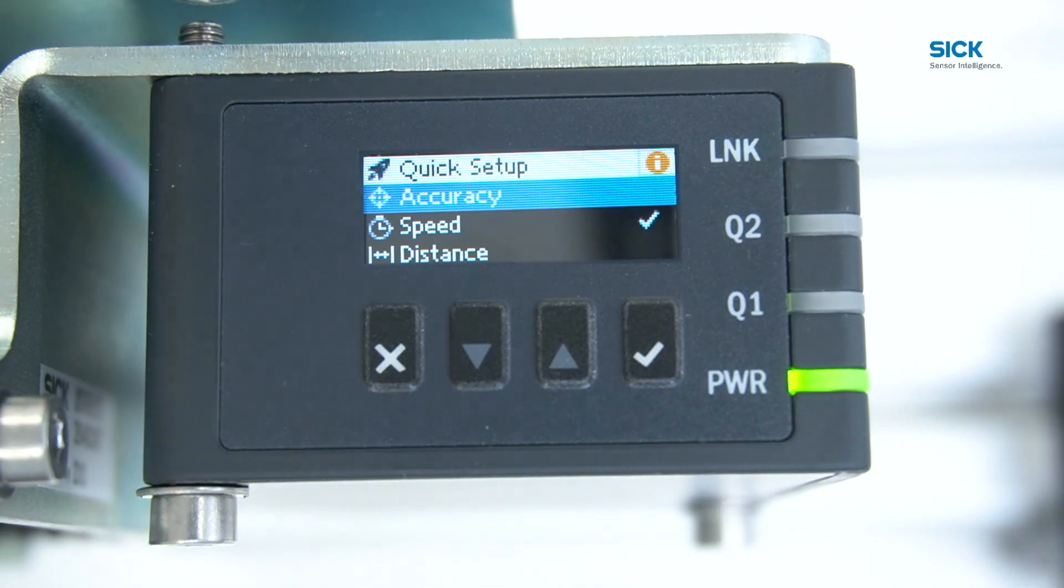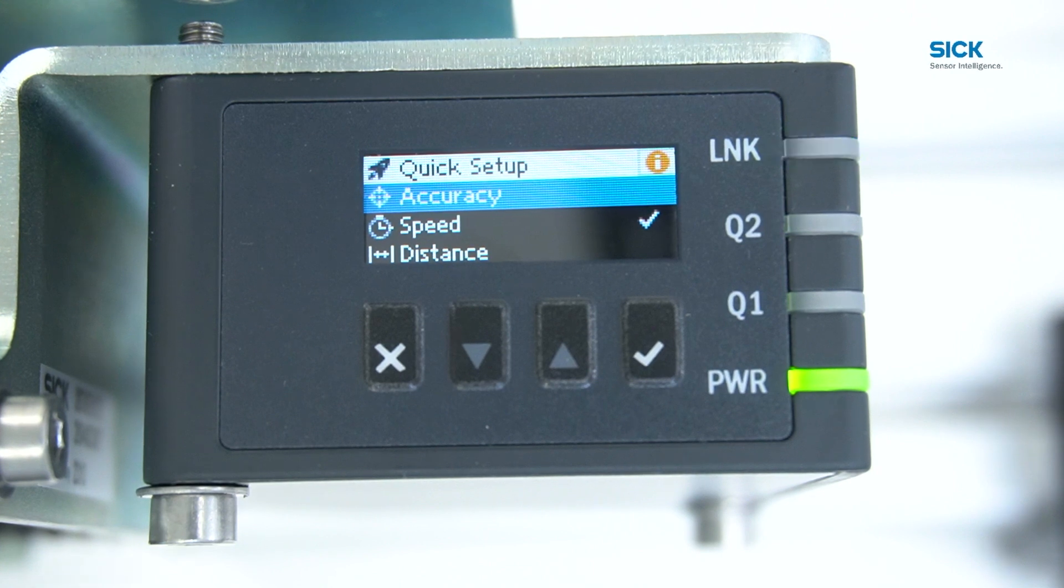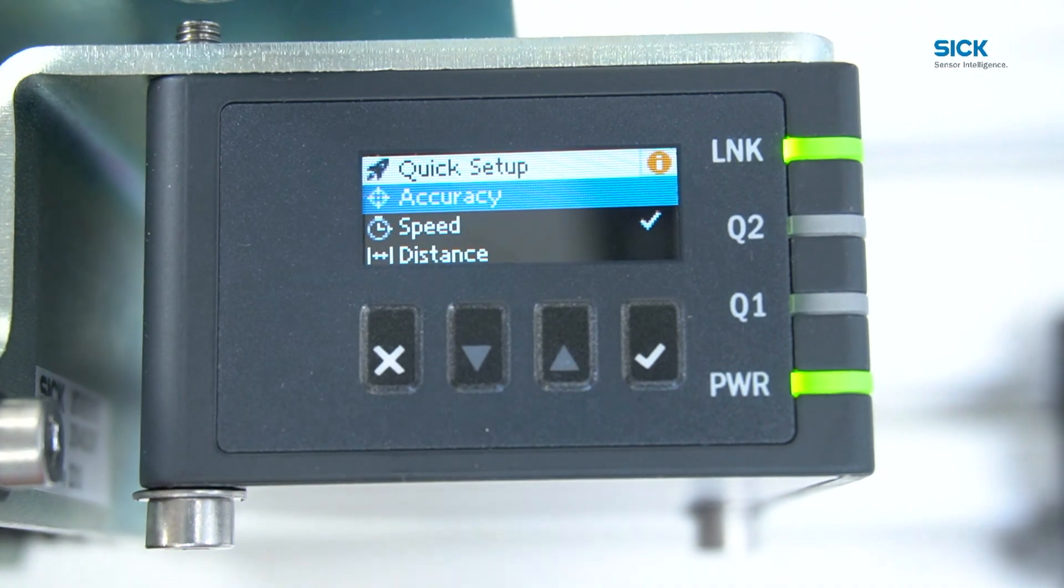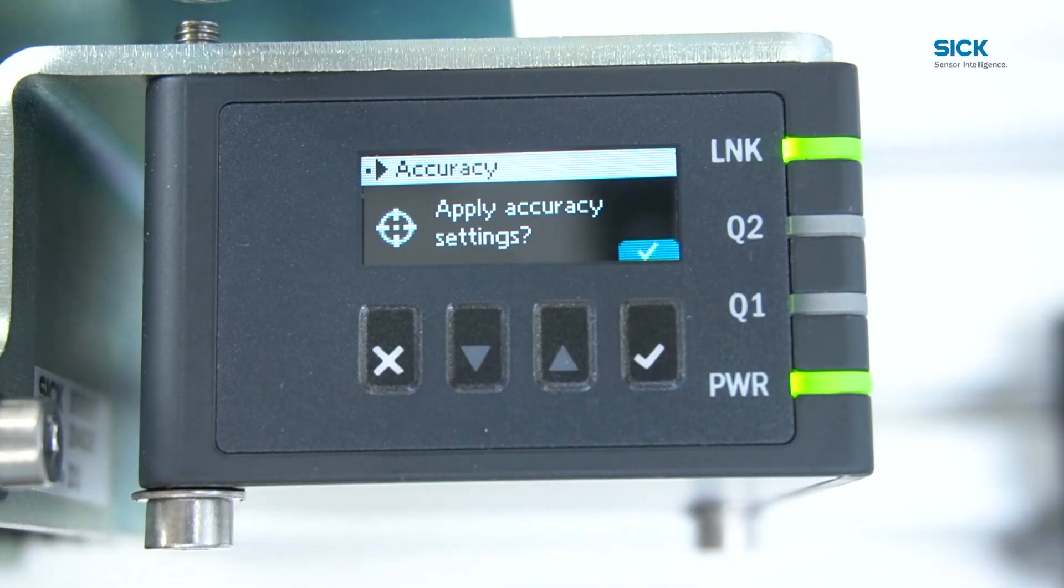Within the quick setup, the DD80 provides three modes: accuracy, speed, and distance. Based on the selected mode, the measurement cycle time will be adapted. To change from factory setting speed to accuracy mode, select with the checkmark button and confirm again.